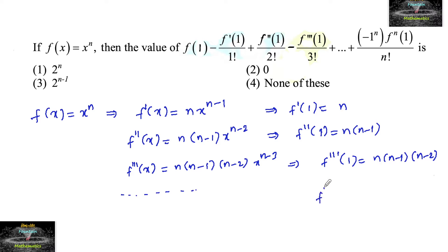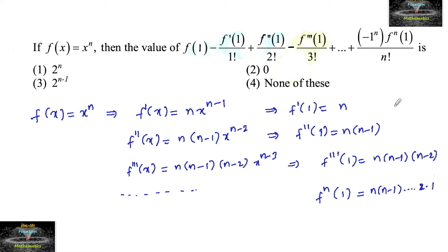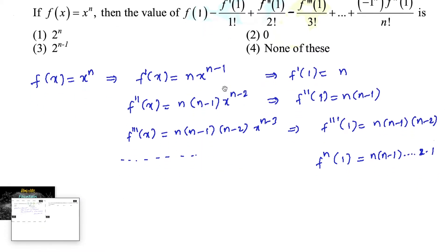For the nth derivative at x = 1, we get n·(n-1)·(n-2)·...·2·1, which equals n factorial.